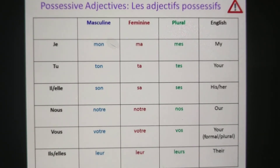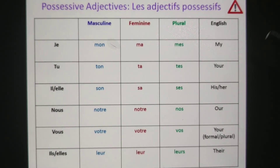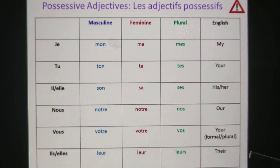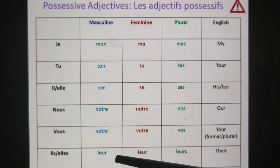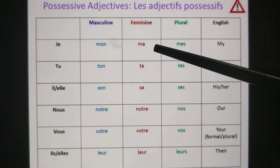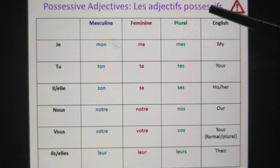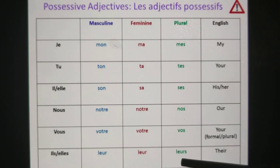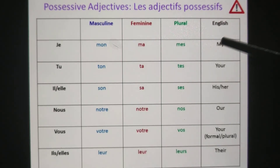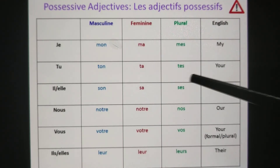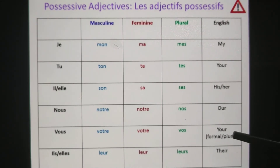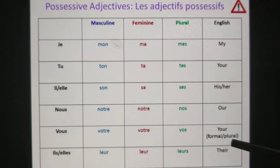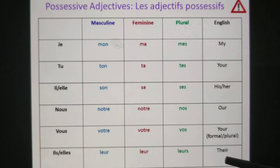Now, whatever we have studied has been compiled into a tabular form. For masculine singular: mon, ton, son, notre, votre, leur. For feminine singular: ma, ta, sa, notre, votre, leur. For plural: mes, tes, ses, nos, vos, leurs. In English: my, your (informal), his/her, our, your (formal/plural), their. Just remember it.